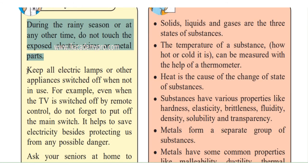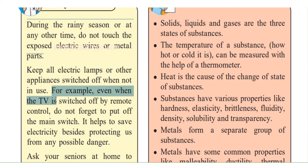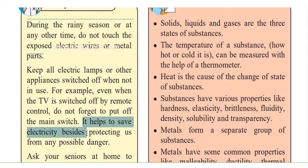Don't forget — keep all electric lamps or other appliances switched off when not in use. Don't unnecessarily keep them on. Sometimes mixers are on, irons are on, mobiles are kept on charging continuously. Switch them off when not using them. For example, even when the TV is switched off by remote control, do not forget to turn it off from the main switch. Before going to sleep, see that all switches are put off.